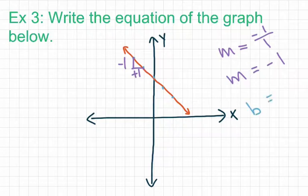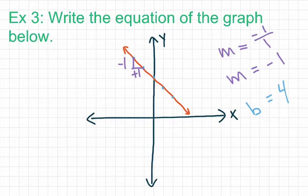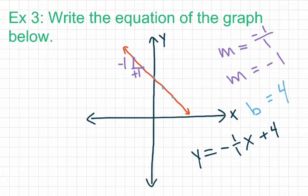For the y-intercept, we identify the point where the line and the y-axis intersect. Tracing the line to the y-axis and counting up from the origin: 1, 2, 3, 4 — so our y-intercept is positive 4. Our equation would be y equals negative 1 over 1, x, plus 4. But since the numerator and denominator are both 1, we simplify to y equals negative x plus 4.